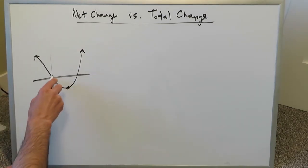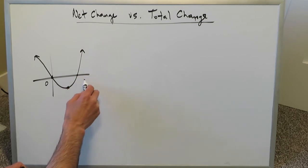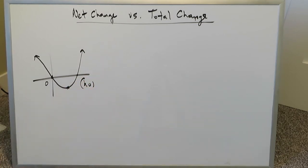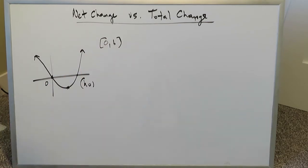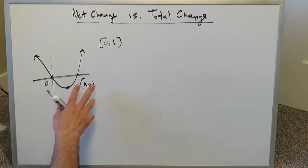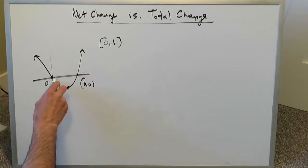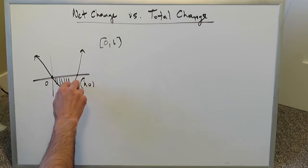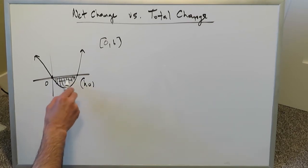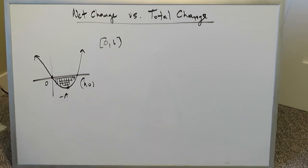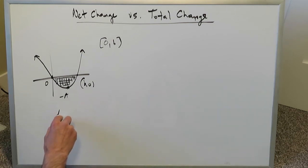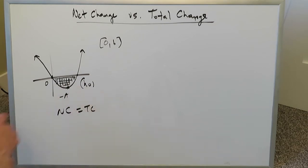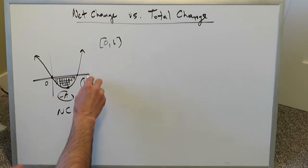If you graph a downward parabola with a vertex and x-intercepts at zero and b — so the interval is zero to b — and the entire area between the curve and the x-axis is negative, then in this instance the net change equals the total change, because all the area is singularly and uniformly negative with no opposing sign.